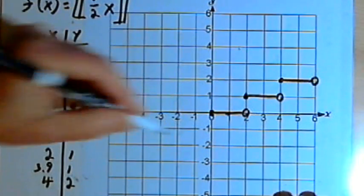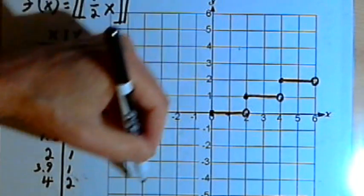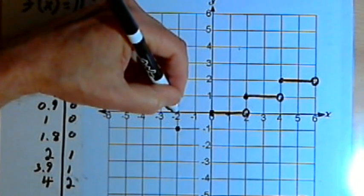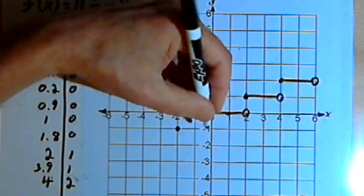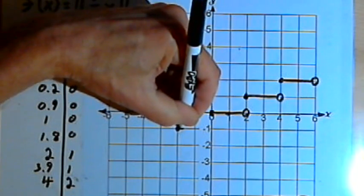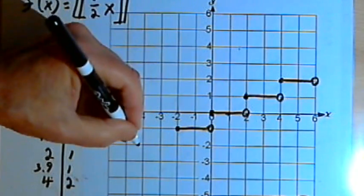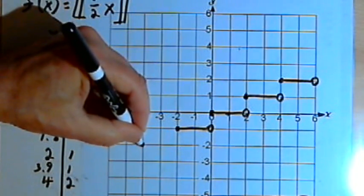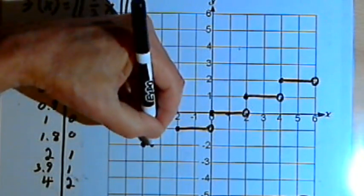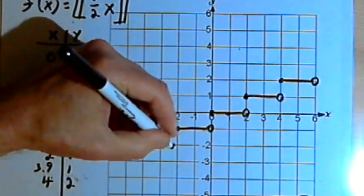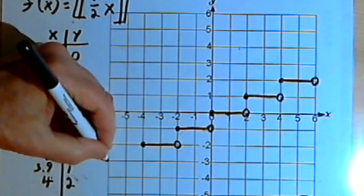For the negative numbers, I can just take this pattern and work backwards. So I'm going to have a point here that starts at (-2, -1) that's going to continue horizontally up until I get to the y-axis. I'll have another point at (-4, -2). That will go horizontally until I get to the point where x equals negative 2. And so on.